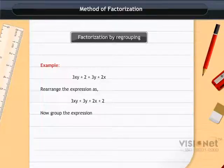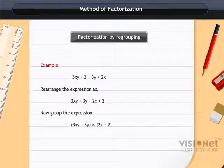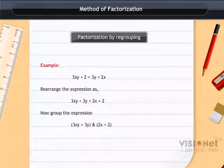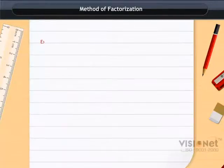Now, group the expression. That is (3xy + 3y) and (2x + 2). This formation of groups by rearranging the expression is known as regrouping. Let us take an example to understand the factorization of algebraic expressions step by step.